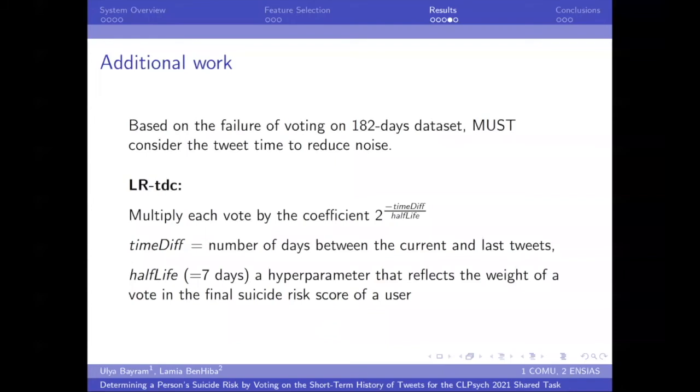To evaluate the hypothesis, we do an additional work after the shared task is over, of course. We apply a logistic regression with time decaying coefficients. We multiply each vote by this coefficient where we give less weighted votes for the oldest tweets by considering the time passed between the current tweet and the most recent tweet.